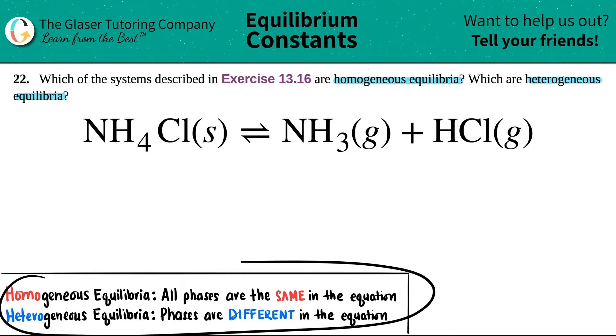I wrote down here what the difference is. In all homogeneous equilibria, all the phases are going to be exactly the same throughout the whole balanced equation. In a heterogeneous equilibrium, those phases have to be different. You have to see at least one difference in the balanced equation.